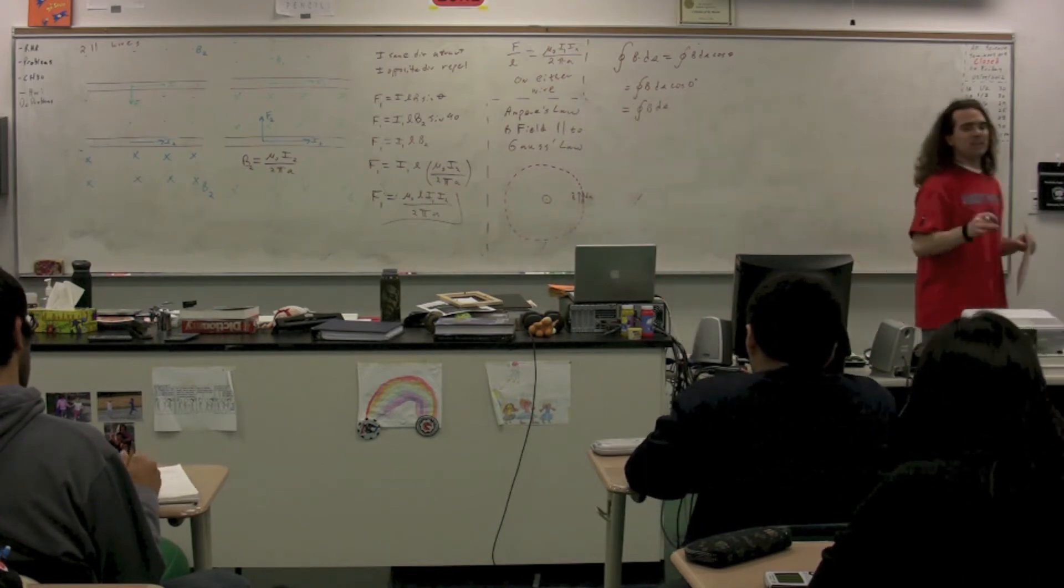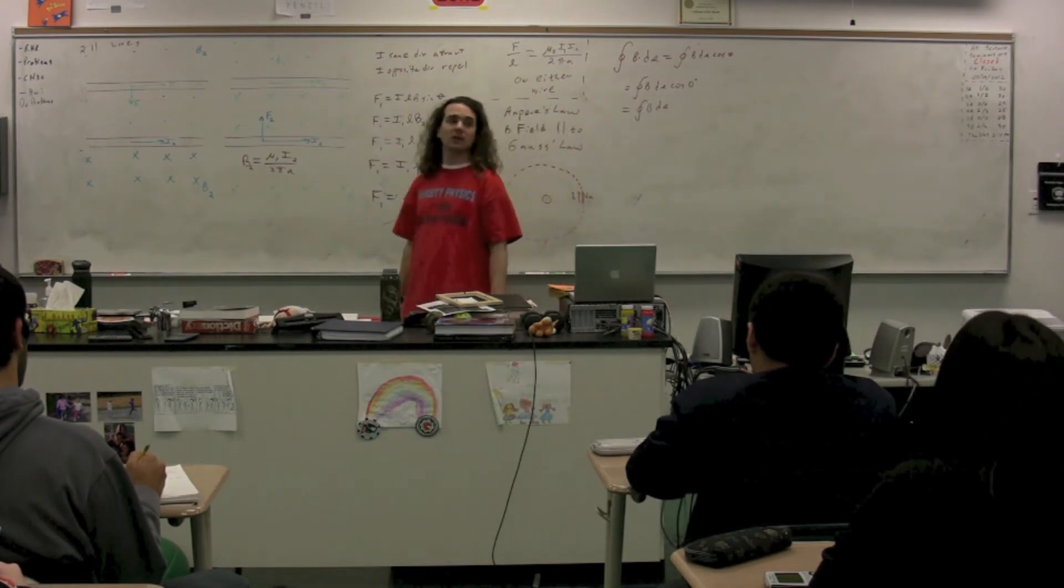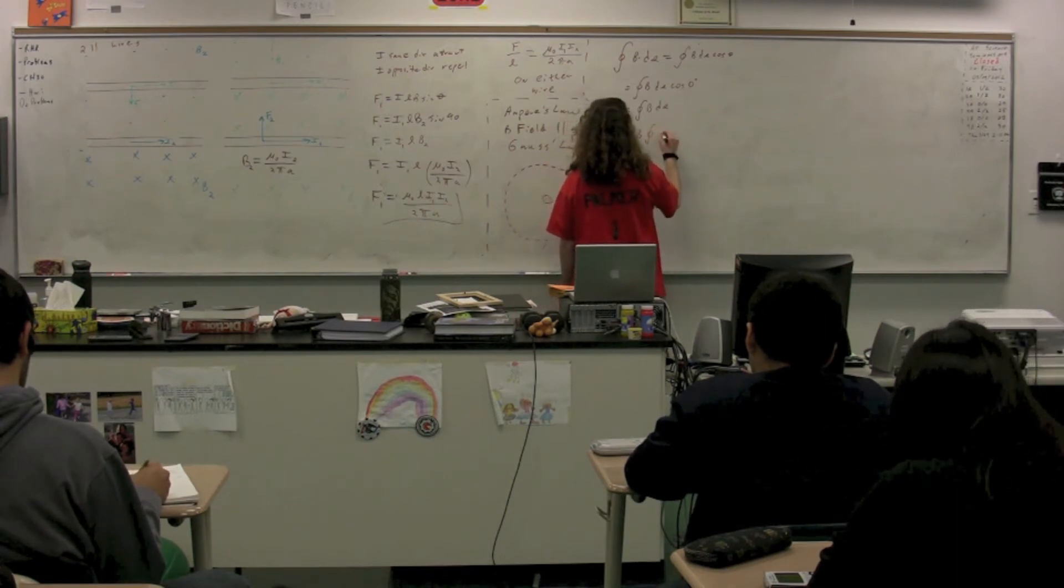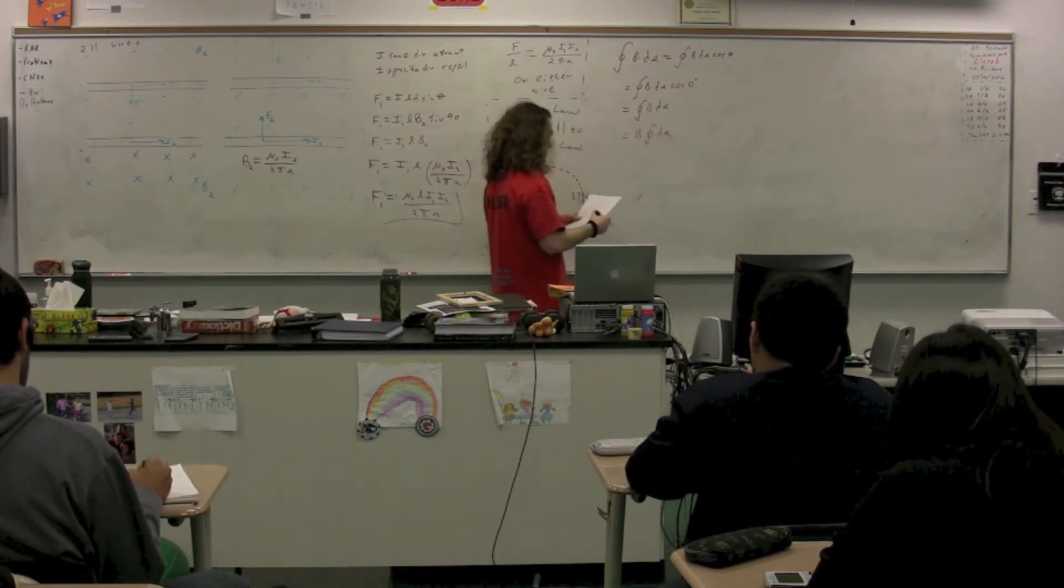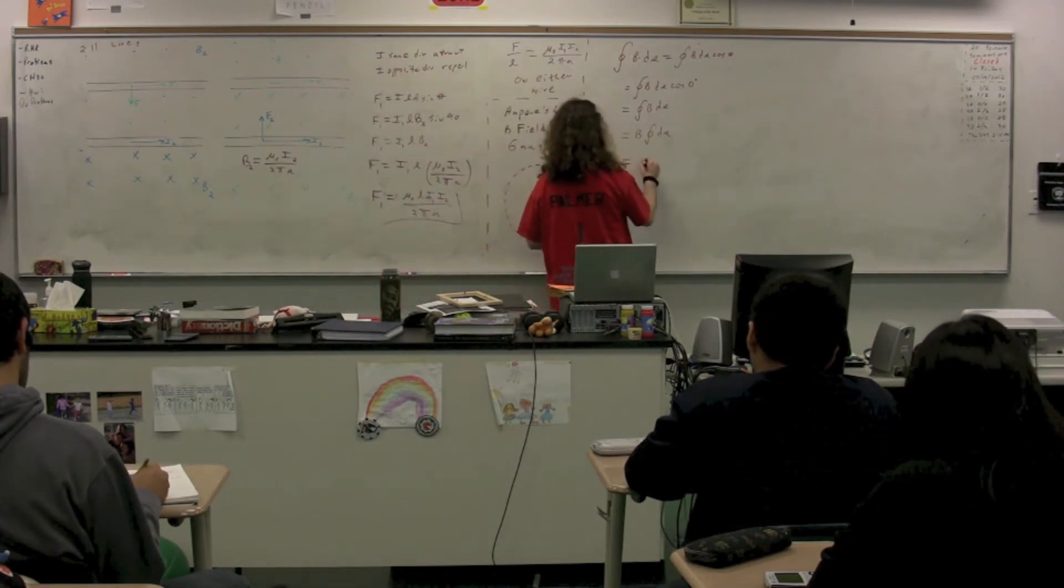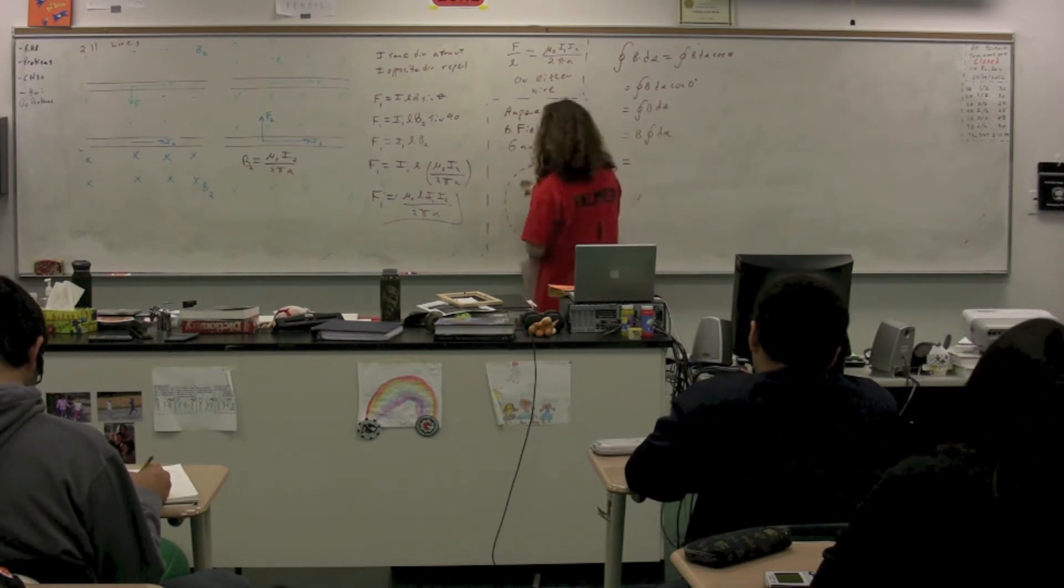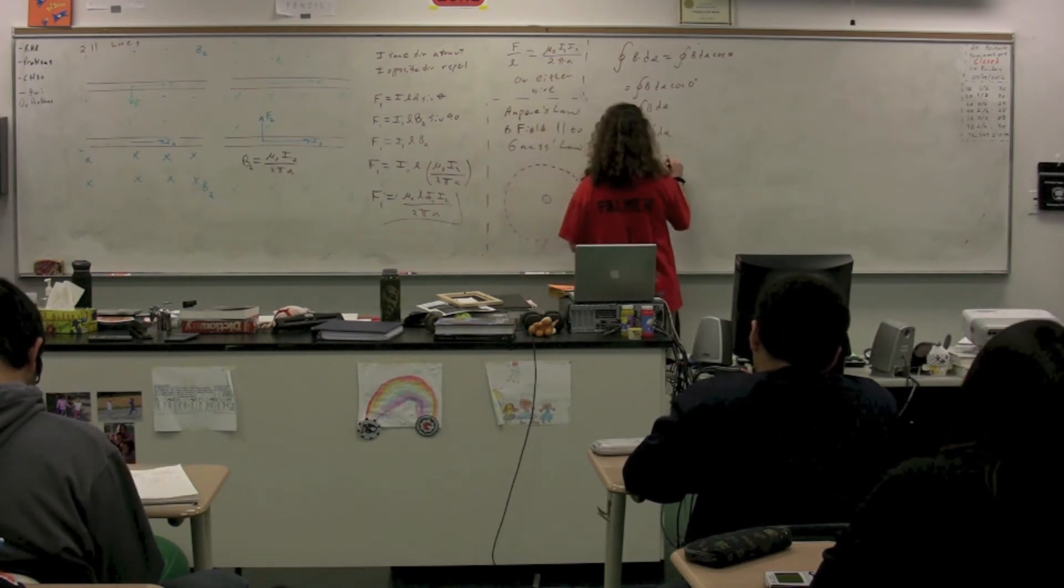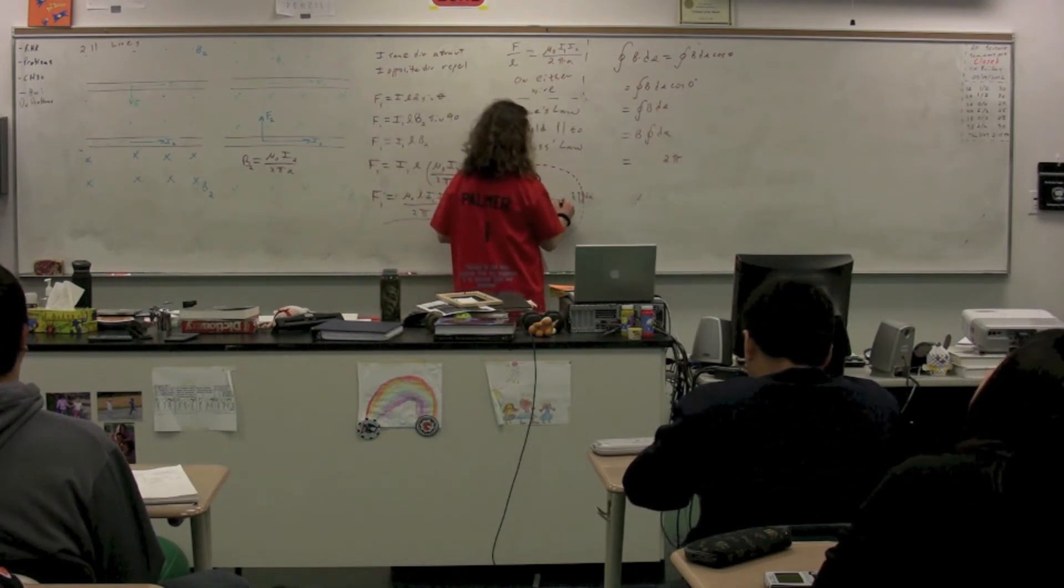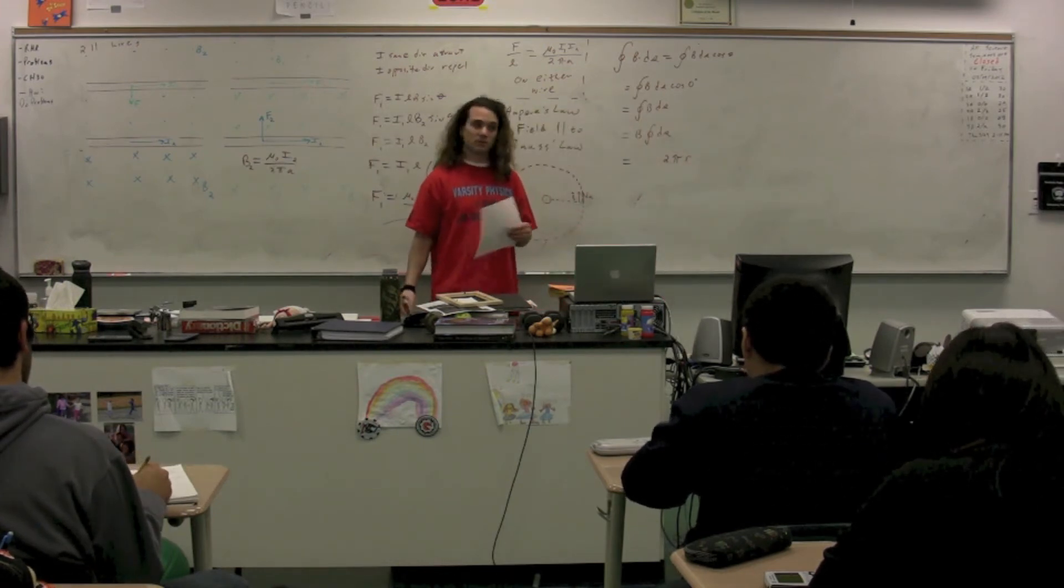Does the magnetic field depend on where it's located on the Amperian loop, class? No. So we can take B out of the integral. So B times the closed loop integral of ds. Well, the closed loop integral of ds is just going to be the length of the Amperian loop here, which is going to be equal to 2 pi times the radius, right? Because it's the circumference. Correct? Yes. All right.